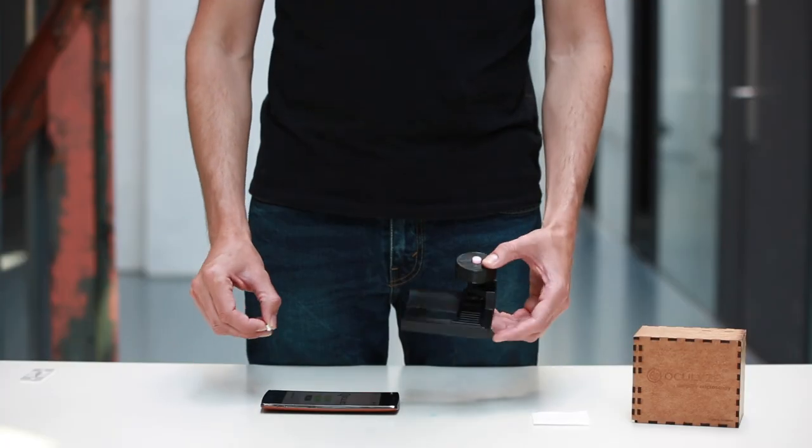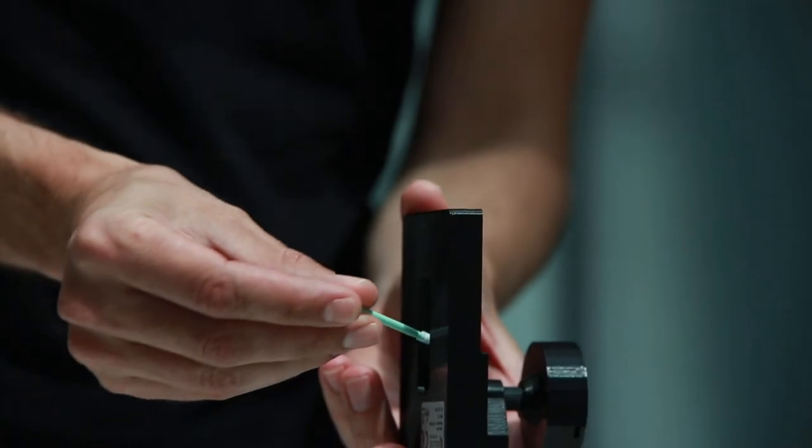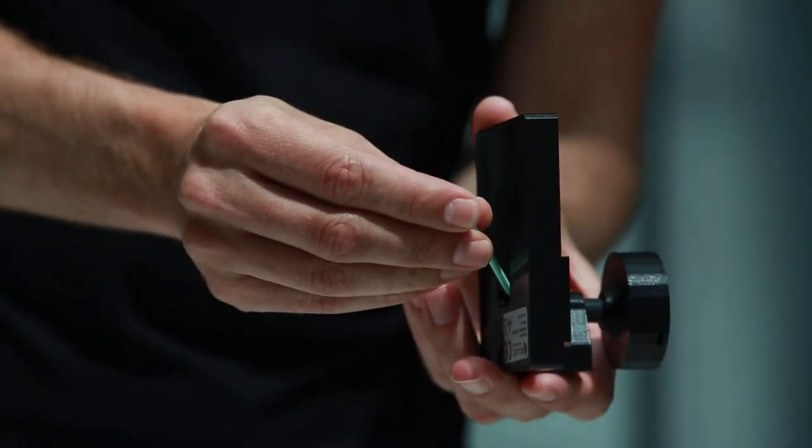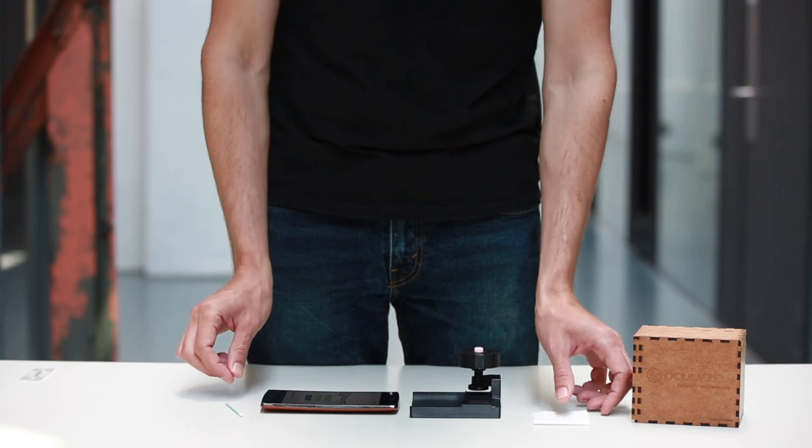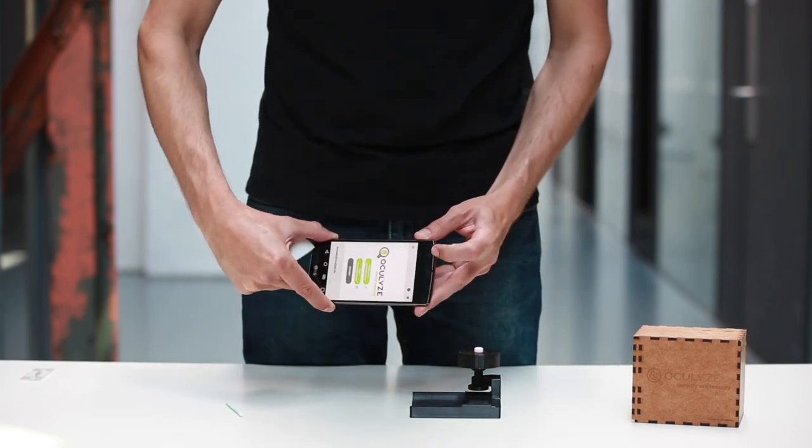To guarantee ideal image quality, the device should be cleaned regularly. Step 1. Clean the optics from the top. Step 2. Clean the optics from the bottom. Step 3. Clean the camera with a cloth.